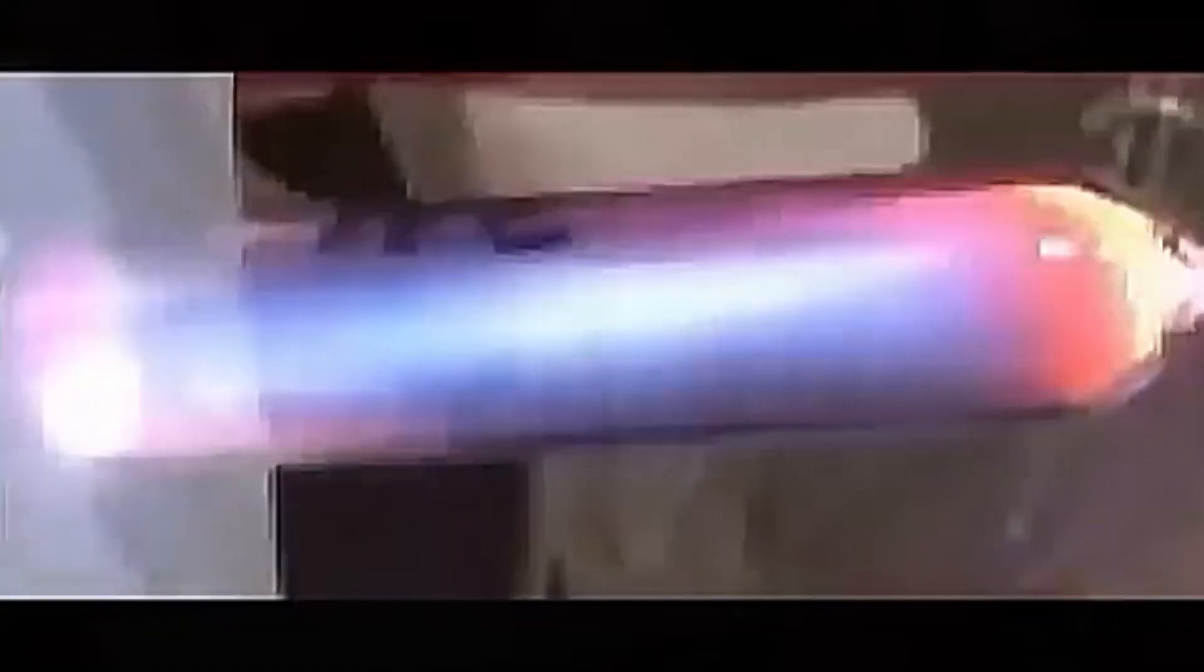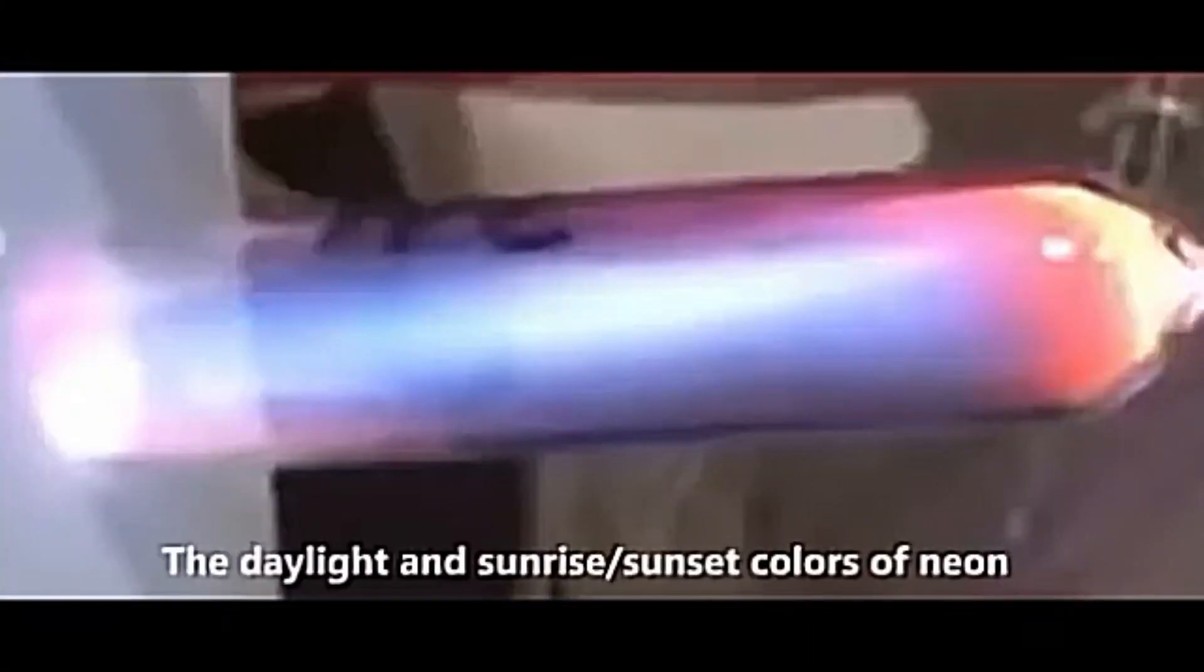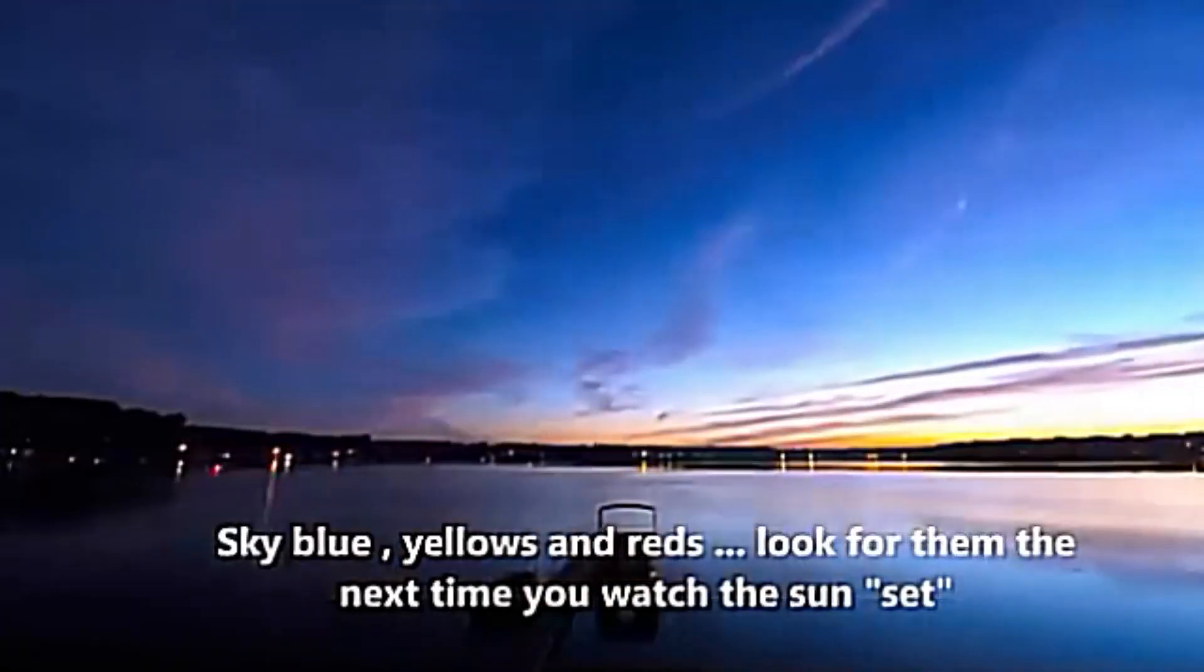Now as you can see here, the daylight and sunrise and sunset colors of neon, which is your sky blues, your yellows, and reds. Remember that everyone, sky blue, yellow, and reds. Look for them the next time you watch the sunset.